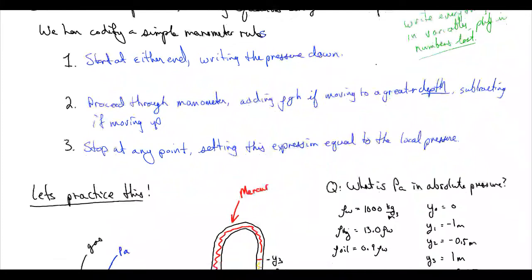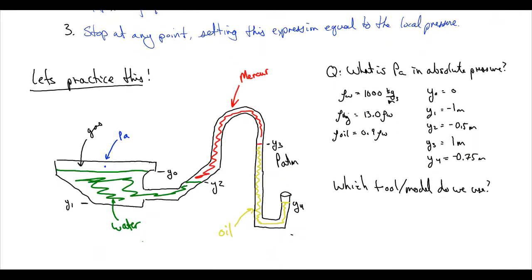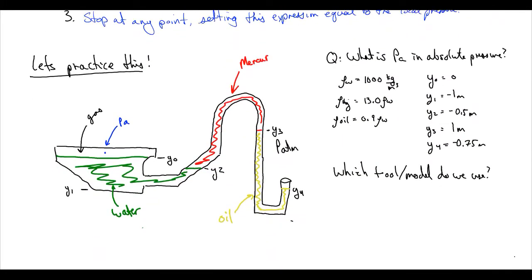So let's practice this. I drew a pretty funky manometer here. We have a container with a gas, and the pressure in that container is PA. And that is at Y0. And then we have water, mercury, and oil. And we have actually four different heights: Y0, Y1, Y2, Y3, and Y4.